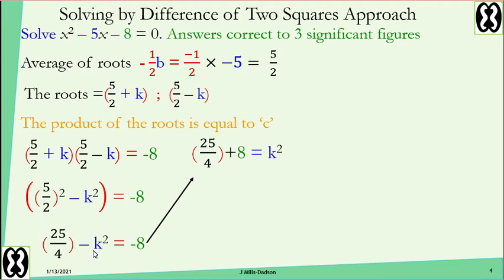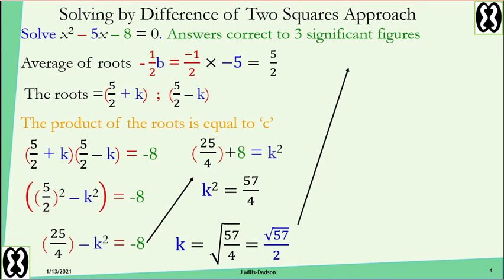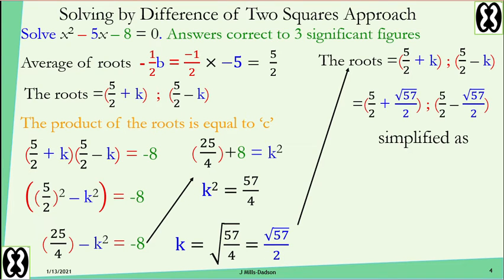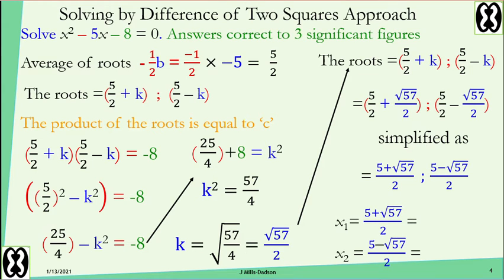Work out the fraction 25 over 4 plus 8: k squared equals 57 over 4. Take the square root of both sides, so k equals root 57 over 2. The roots are five over two plus root 57 over 2, and five over two minus root 57 over 2. Simplified: the first root is 5 plus root 57 all over 2, the second is 5 minus root 57 all over 2. Using a calculator to three significant figures gives 6.27 and negative 1.27.